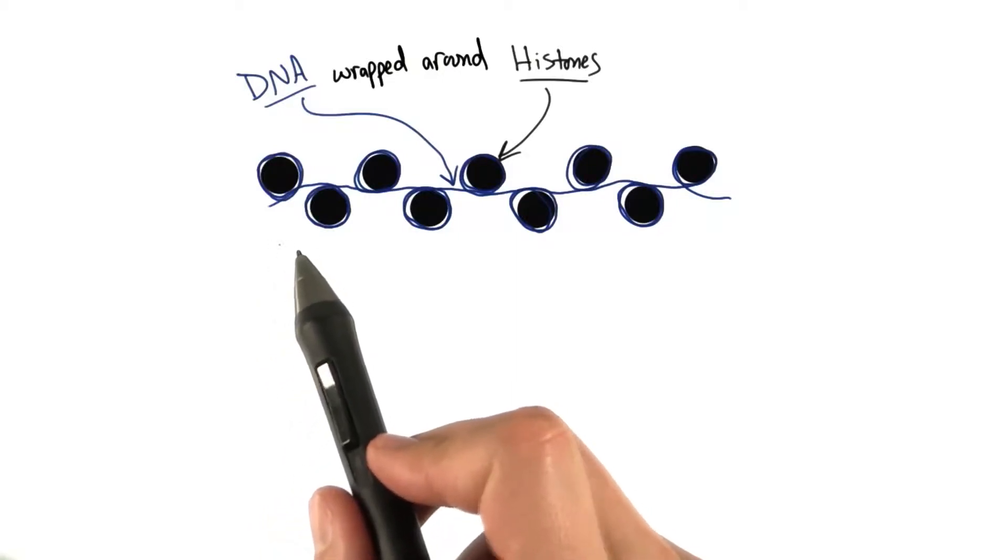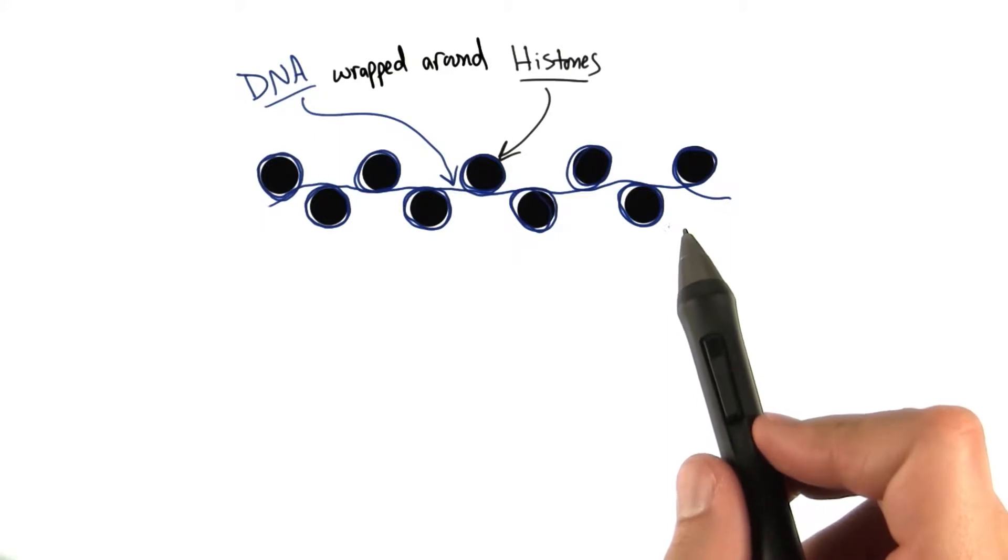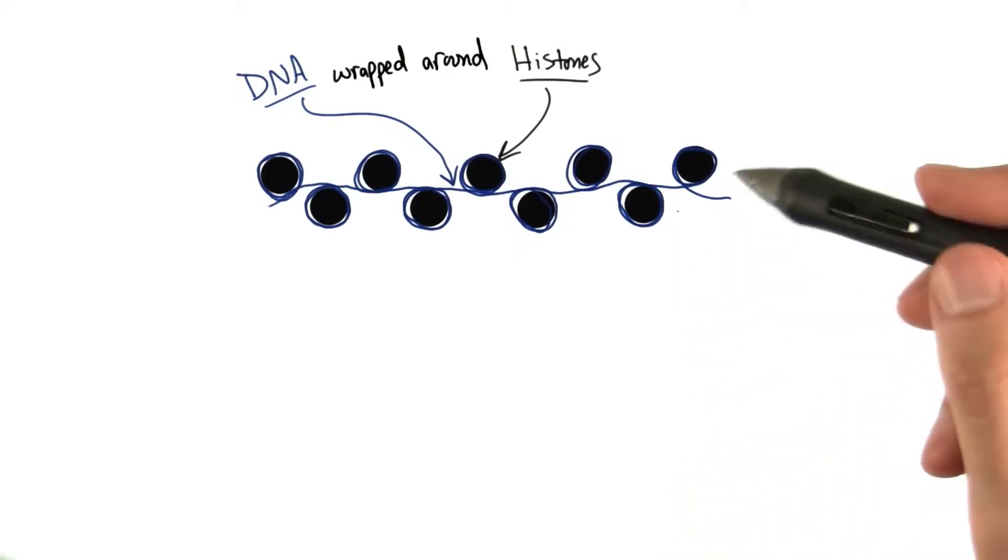Like string on a spool, DNA can be wrapped onto these important proteins called histones, taking on a shape that's known as beads on a string.